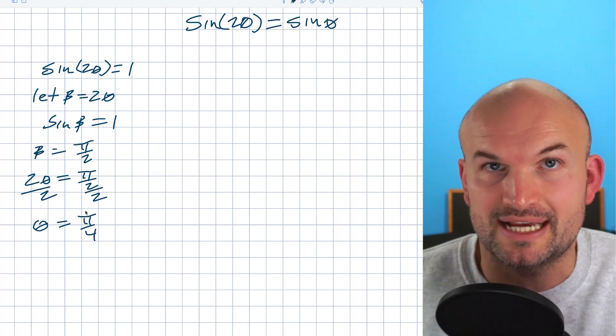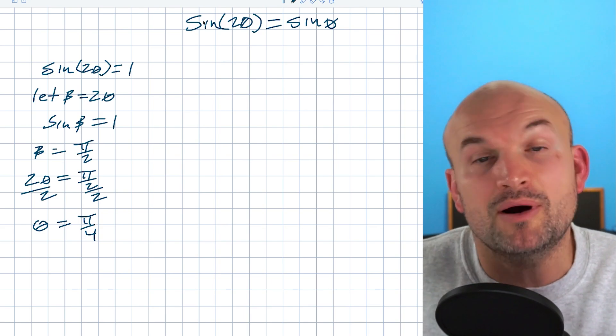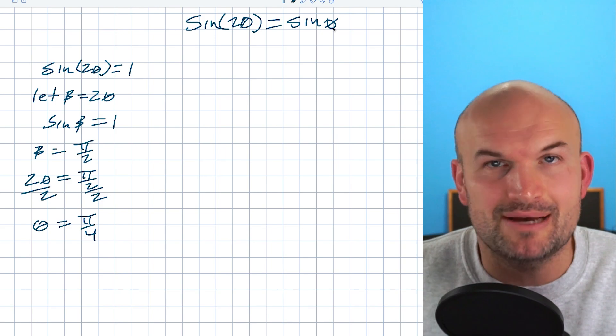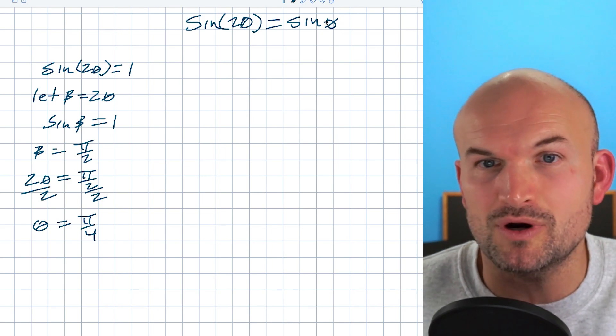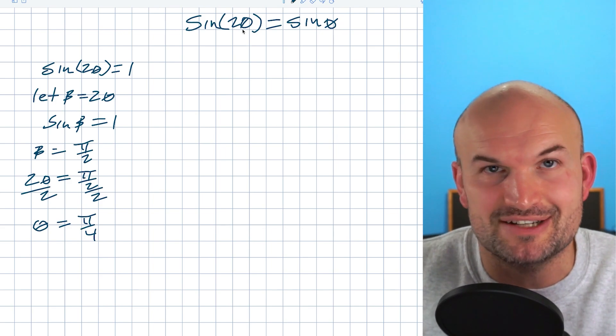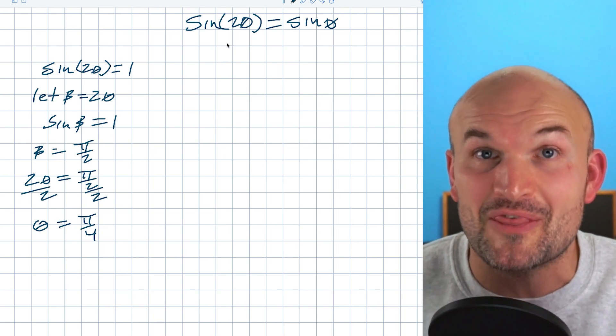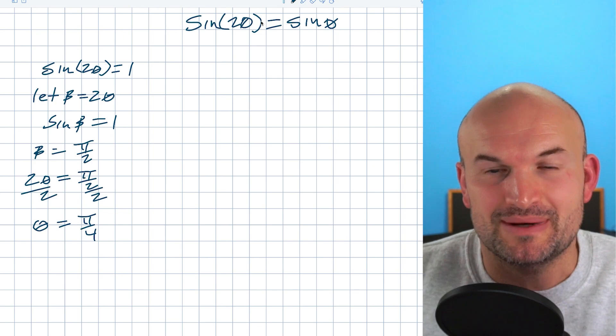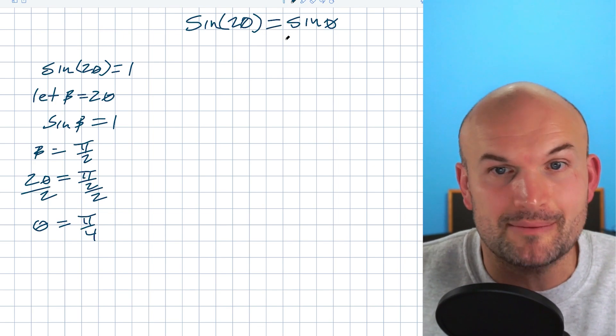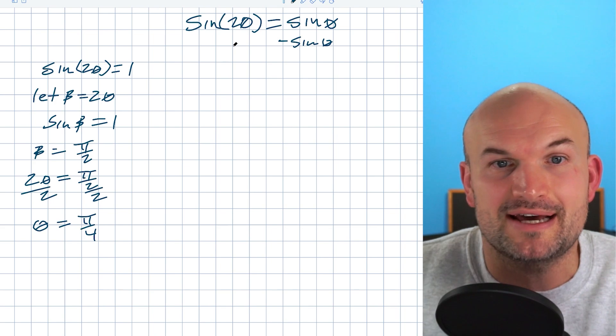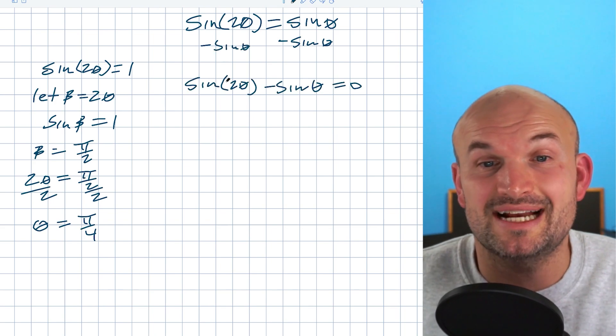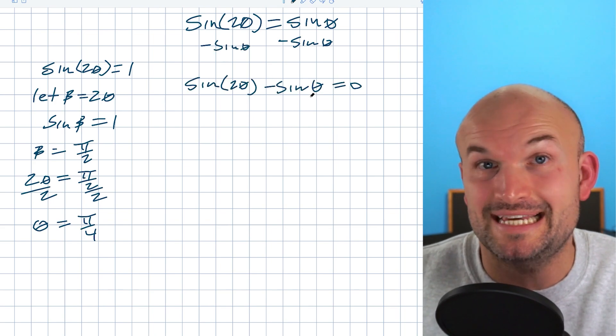So that works when we have an isolated double angle for a trigonometric function. But what about when we have a double angle here, but then we have a single angle here? We don't want to make the silly mistake of dividing by sine on both sides or dividing by theta on both sides, because those are not going to work. What we're going to do is get our trigonometric functions on the same side. So the first thing I'm going to do is subtract sine of theta on both sides. Therefore, I have sin(2θ) - sin(θ) = 0.